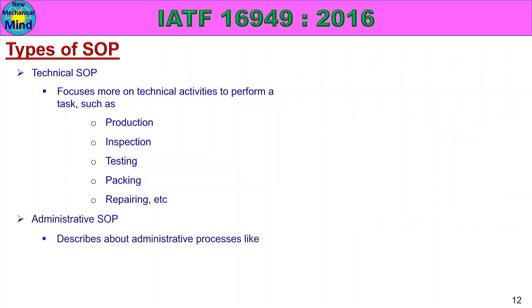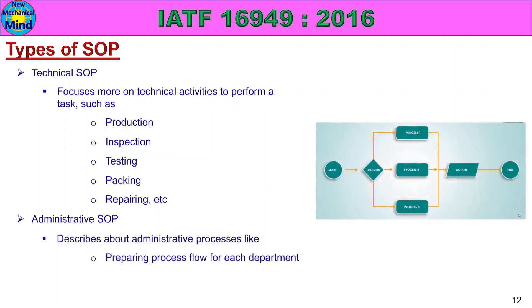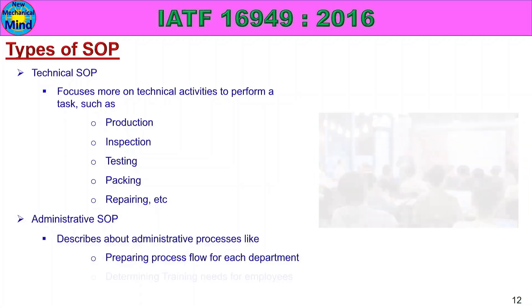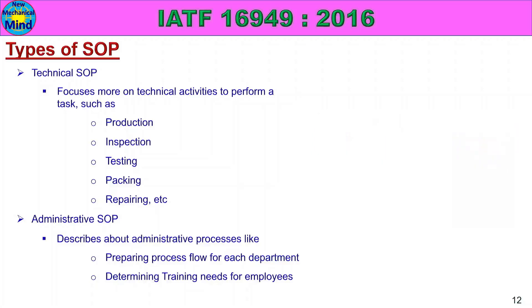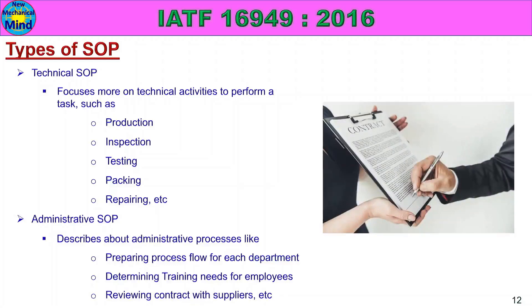Administrative SOP describes administrative processes. Examples of Administrative SOP include reviewing, contracts with suppliers, business contractor, and procedures. If you have Technical SOP and Administrative SOP, that is the difference between the two.